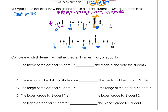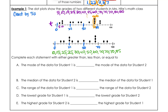For the second data set, I'll use green. The grades are: 10, 15, 25, 25, 30, 35, 40, 50, 60, 65, 70, 70, 70, 70, 85, and 90. No 75s or 80s. Again, I'll circle the tallest column — which is the 70s — and label it as mode.